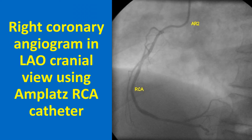An LAO cranial view of right coronary angiogram using an Amplatz right catheter is shown. This RCA was difficult to cannulate with Judkins right catheter even after repeated attempts. The angiogram shows only minimal luminal irregularities of the RCA. Right ventricular branches are seen originating from the proximal region, and terminal branching of the RCA into posterior left ventricular branches and posterior descending coronary artery are also seen.